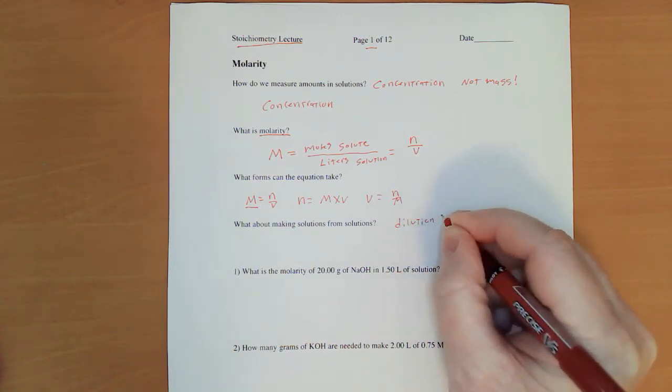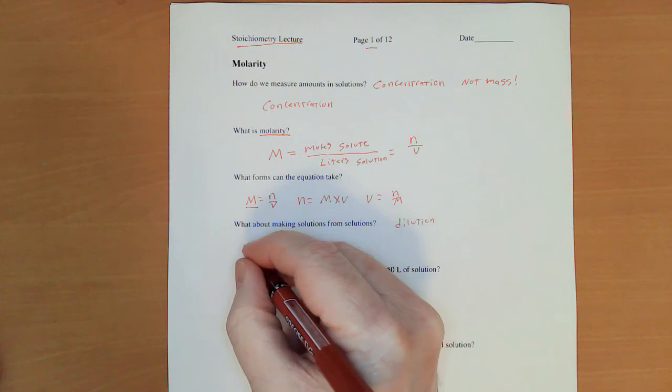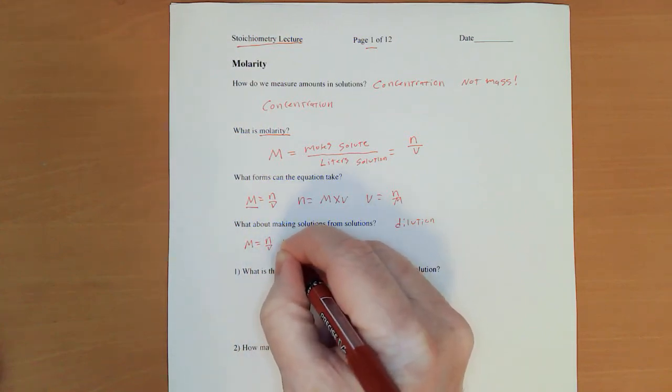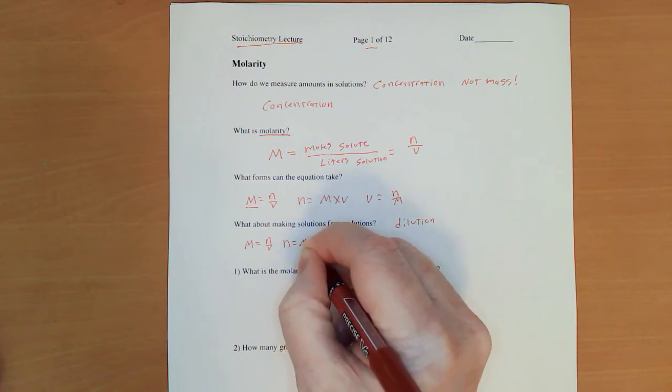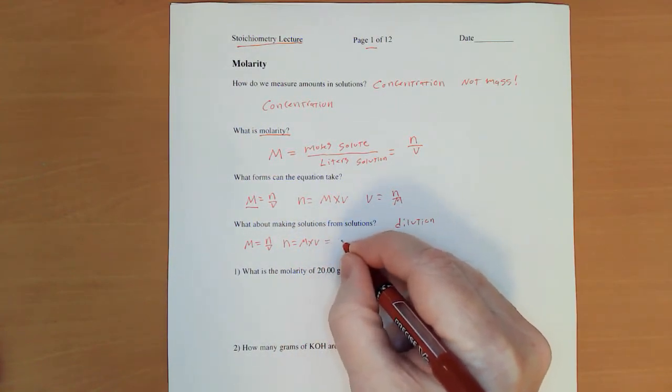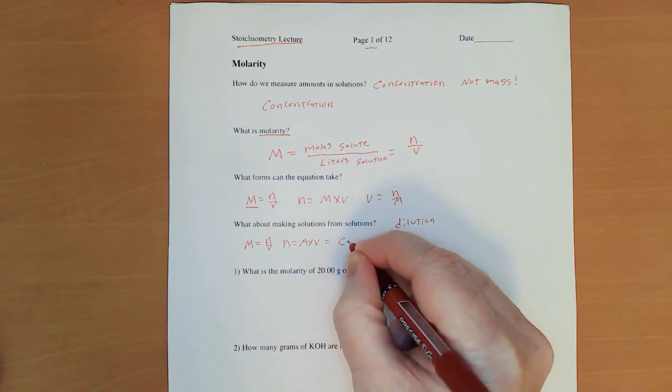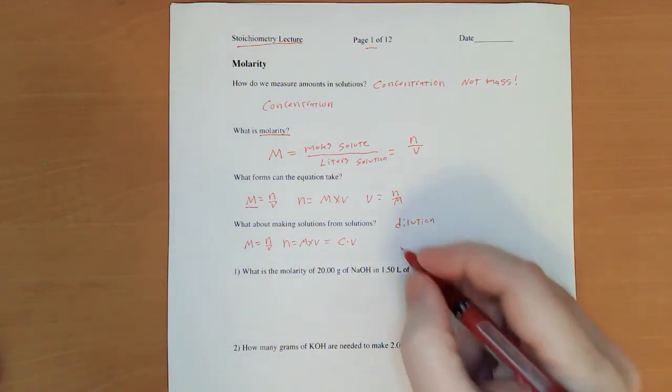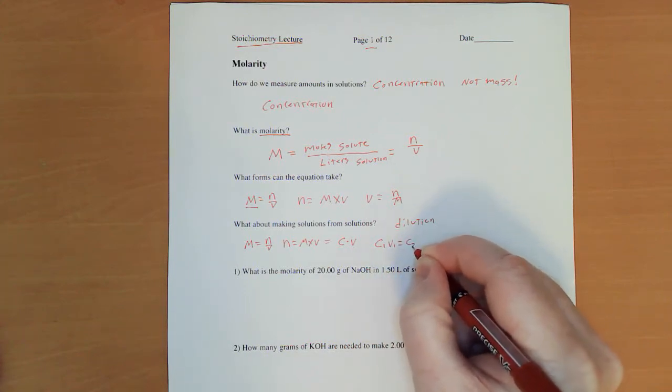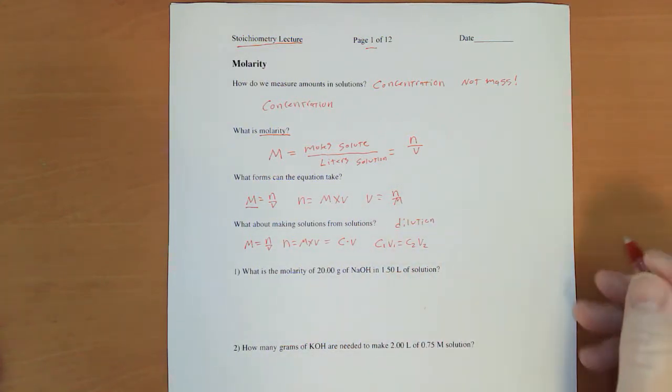We have a dilution formula. Where if molarity equals moles over volume and moles equals molarity times volume, we could say that that equals concentration times volume.